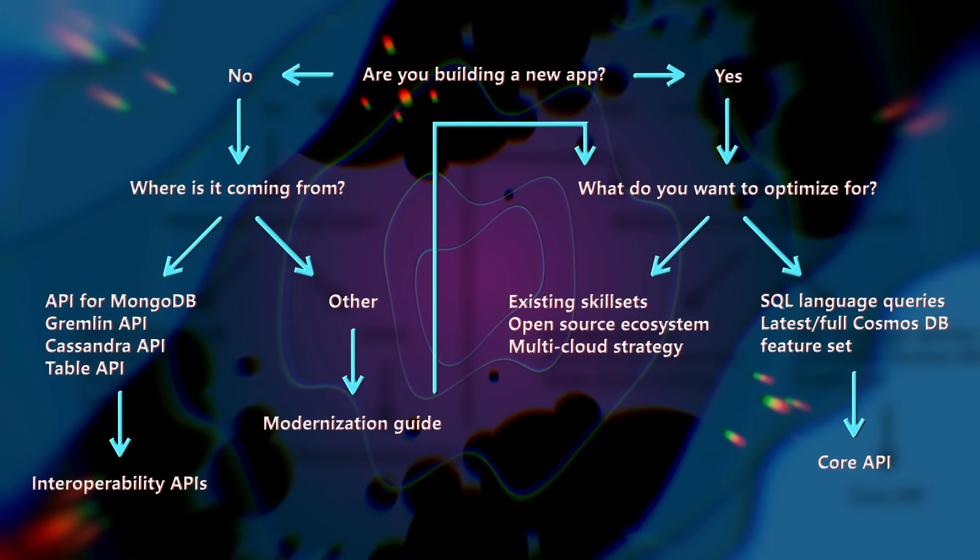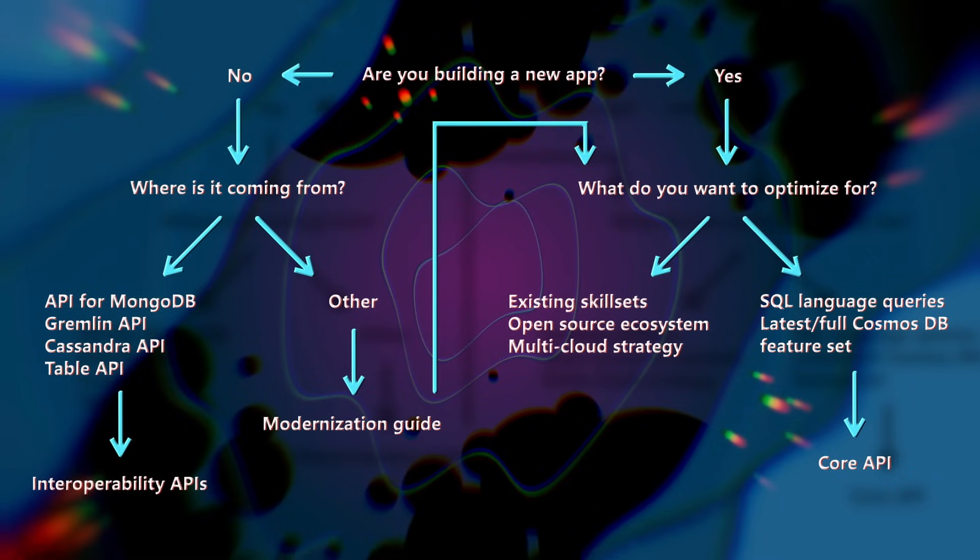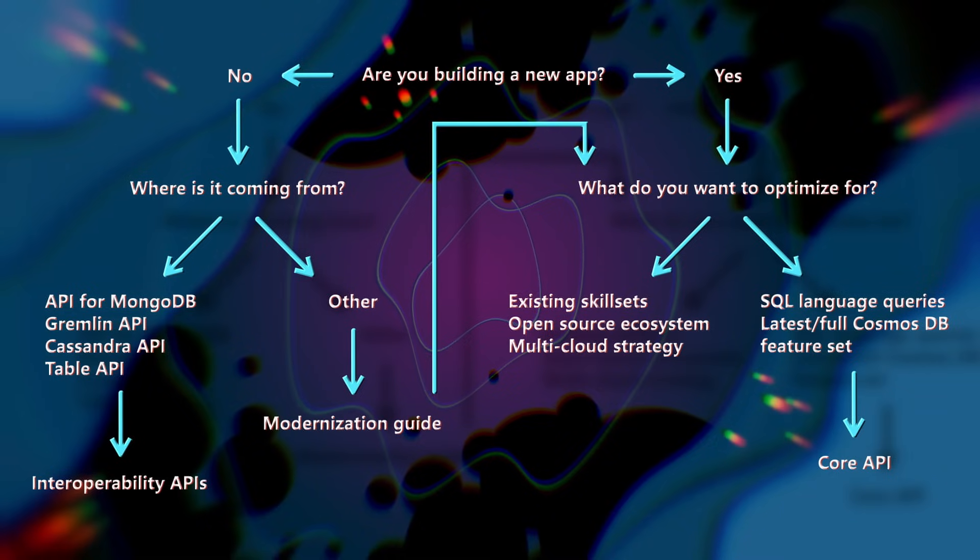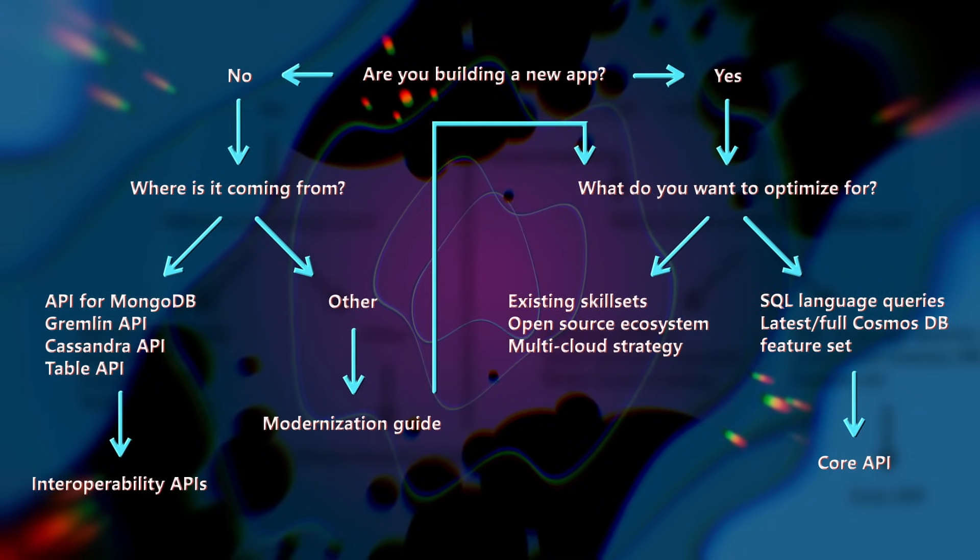The core API has all the financially backed SLAs and is full of really useful features such as integrated cache, which are not available in the compatibility APIs. The primary advantage of using the open source compatibility APIs is that they allow you to leverage your existing skill set. If your team is already ramped up on Cassandra, Mongo, or Gremlin, you can onboard Cosmos DB without really having to learn something new. Second, it allows you to leverage the existing ecosystem and tooling. Third, it also allows you to take advantage of a diverse deployment strategy — using similar APIs for on-premise, hybrid, and multi-cloud deployments. The decision matrix comes down to optimizing around your existing configuration, or choosing the core API to take full advantage of the native Cosmos DB engine's performance SLAs and additional features.